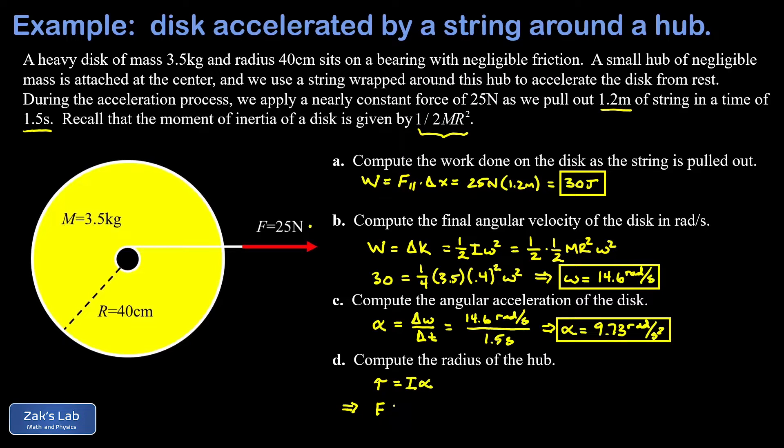The torque we're exerting is given by the known force of 25 Newtons multiplied by the lever arm, the radius of the hub. Our moment of inertia is one half MR squared, where R is the radius of the disk. And then alpha is something we already computed. So now we can just go ahead and plug in the numbers and solve for that little r, the radius of the hub. F was 25 Newtons.